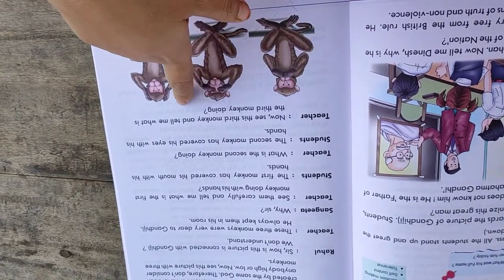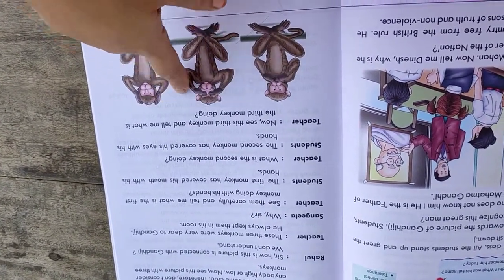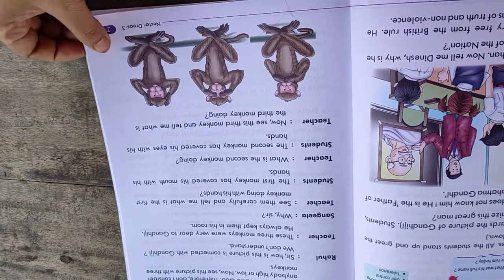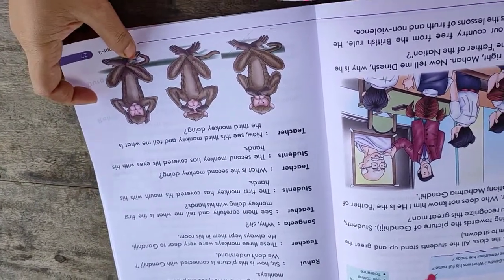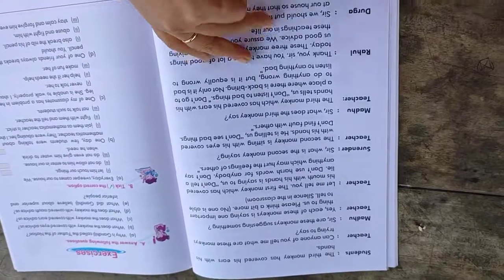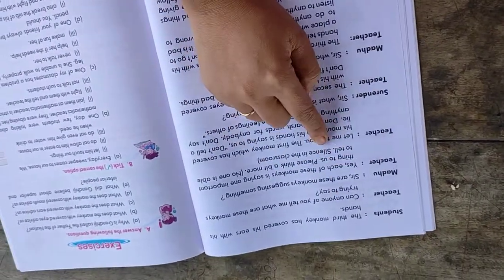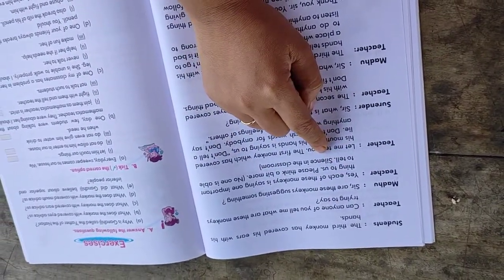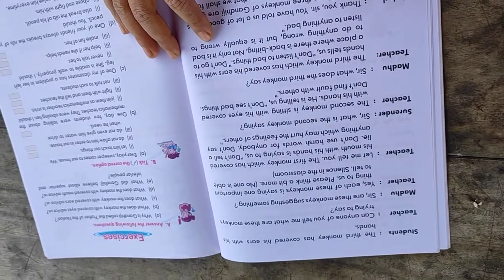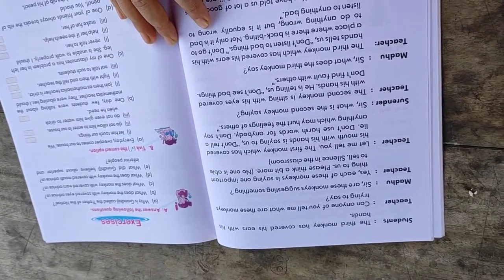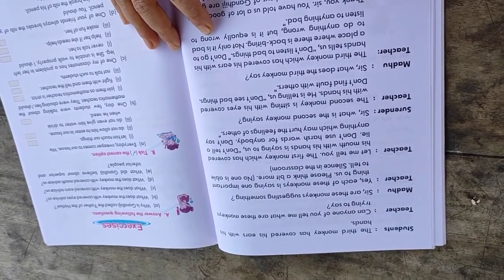Teacher says, now see this third monkey and tell me what is the third monkey doing? Students respond, the third monkey has covered his ears with his hands.